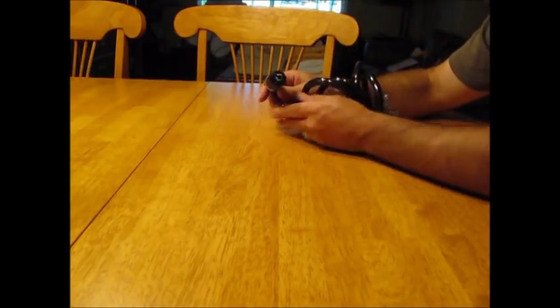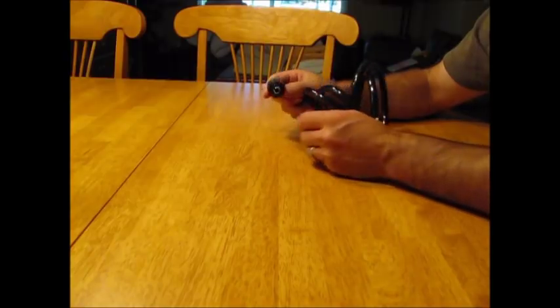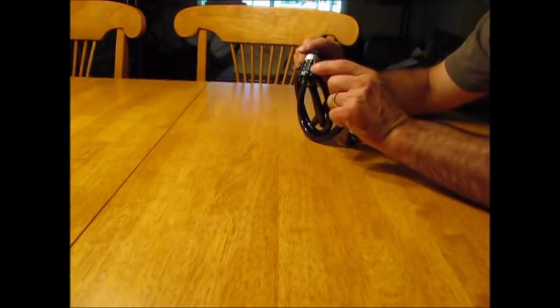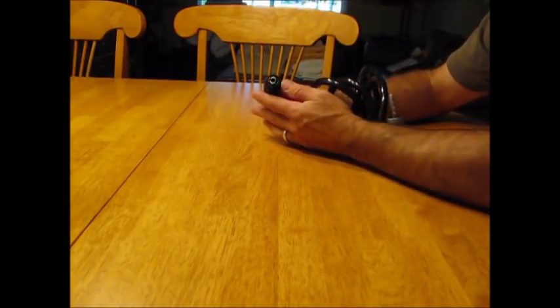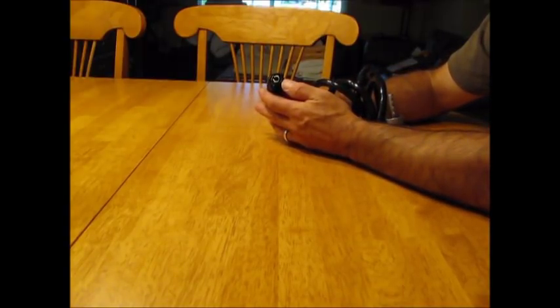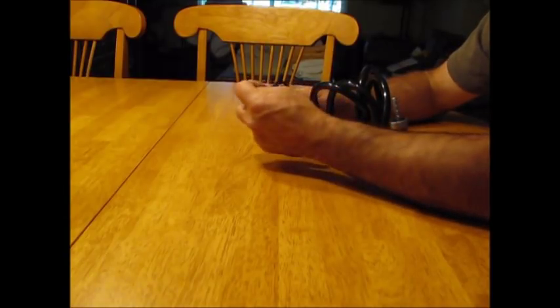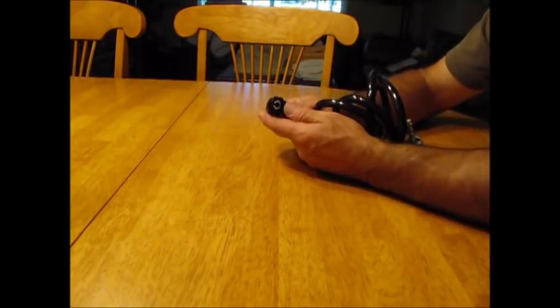When that pops, that allows me to set whatever combination I want. So I'm just going to change it to zero, zero, zero, nine, and then I push this back in to set it. I'm going to push it this way, opposite the red side, like so, and you're going to hear it snap.